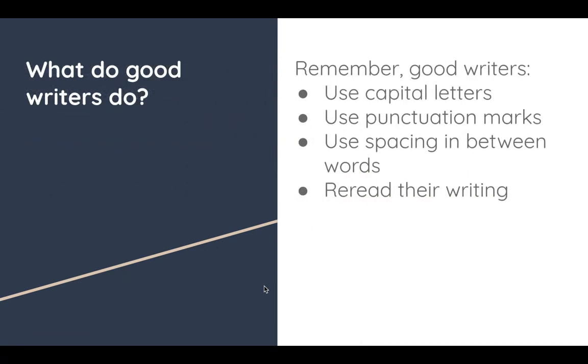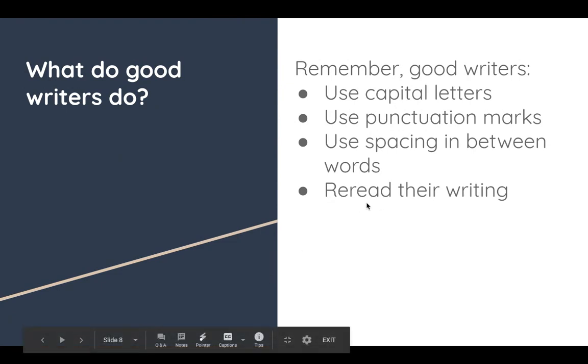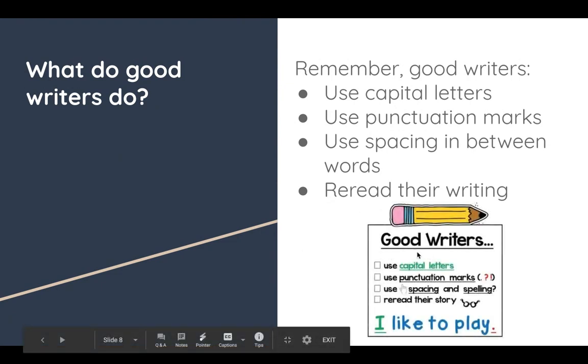And finally, I want to remind you what are some things good writers do. Remember that we use capital letters at the beginning of each sentence and whenever we're talking about a proper noun. So that means someone's name, the name of a restaurant. Make sure you're using punctuation marks that includes commas, period, question mark, exclamation mark. Remember to use spacing in between each word. And then finally, go back and reread your writing. I want you to ask yourself, does this make sense?